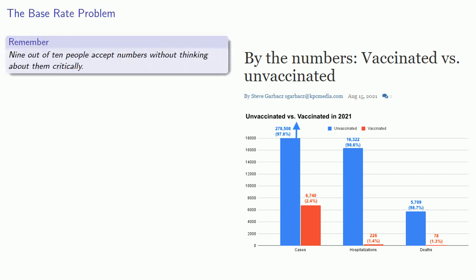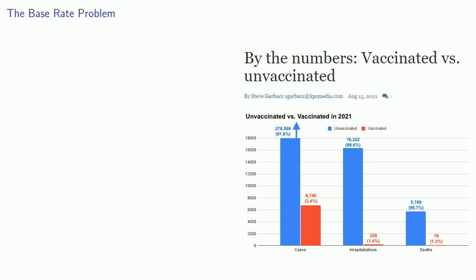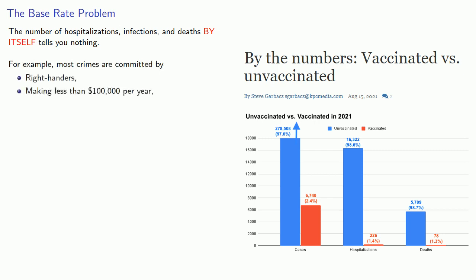Now 9 out of 10 people accept numbers without thinking about them critically. And in this case, the important thing is that the number of hospitalizations, infections, and deaths by itself tells us nothing. For example, most crimes are committed by right-handers, making less than $100,000 a year, living in cities.